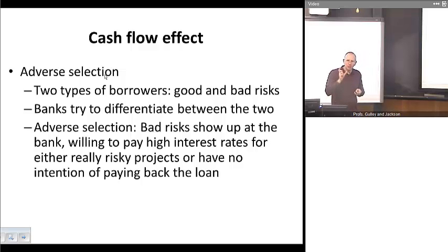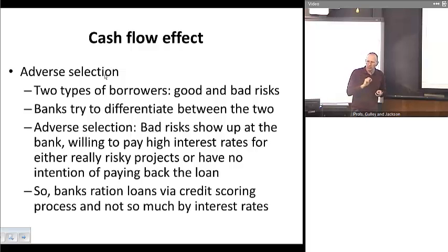And the problem is this. Again, summarizing, those people are more likely to be staying in line. Your good risks have left. So that's the adverse selection problem. And the point here is this. Banks don't, on average, do so much rationing via interest rates as they do by credit scoring. In other words, trying to discover the credit worthiness of their potential borrowers.